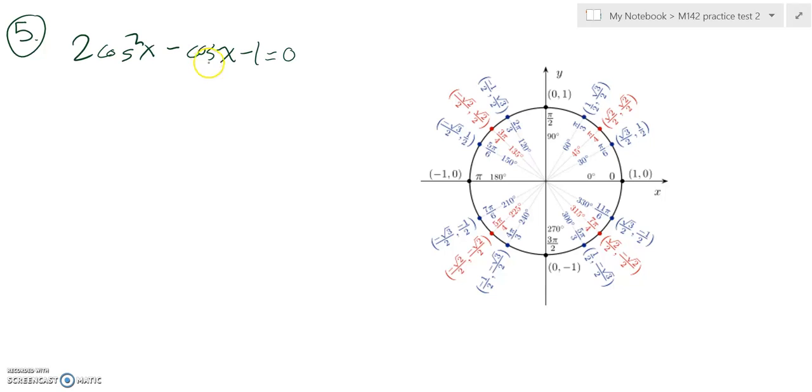So I notice everything is in terms of cosine. The other thing I notice is that I have this in a quadratic form. In other words, I have something squared minus that same thing minus some value.